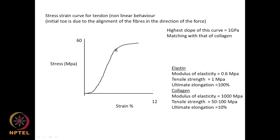If you look at the stress-strain curve for a tendon, it exhibits a non-linear behavior. Initially, this is called a toe portion — the stress does not increase with strain, but after a certain strain it starts increasing, and then it behaves in the normal elastic and then plastic manner.